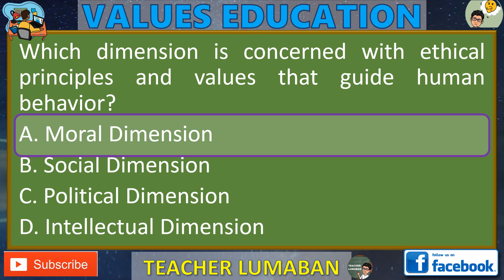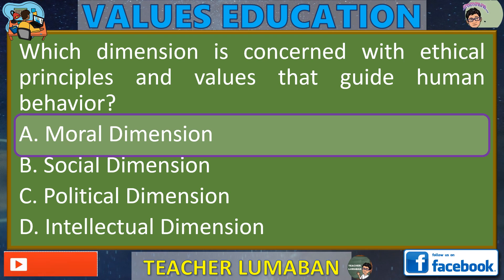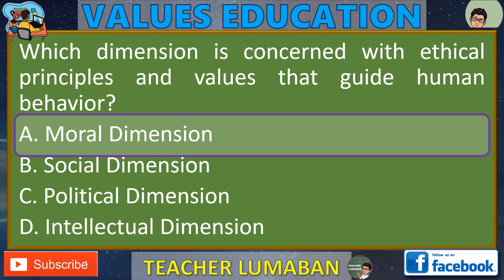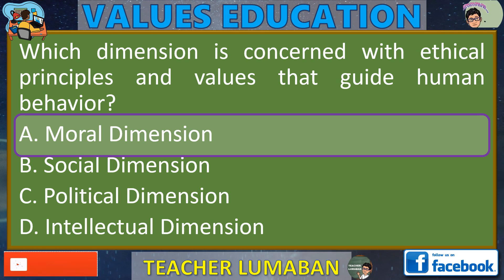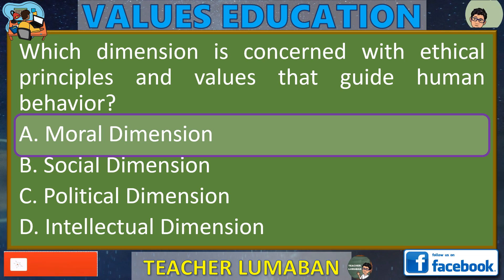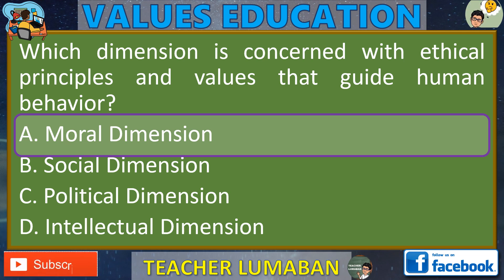The political dimension focuses on power, governance, and decision-making processes in society. It involves the study of political systems, ideologies, policies, and the distribution of power and resources. Ang political na dimensyon ay nakatoon sa kapangyarihan, pamamahala, at mga proseso ng paggawa ng desisyon sa lipunan. Kabilang dito ang pag-aaral ng mga sistemang pampolitika, ideolohiya, patakaran, at pamamahagi ng kapangyarihan at mga mapagkukunan.